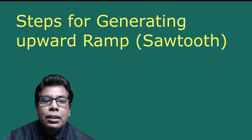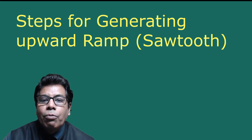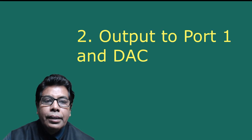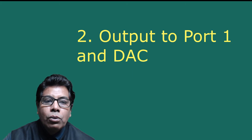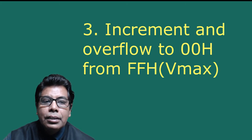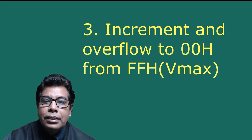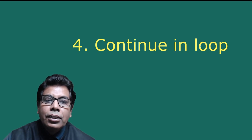The steps for generating an upward ramp are as follows. First step: start with 00H — the digital input should be 00H. Second step: output to port 1 and DAC. Third step: increment and overflow to 00H from FFH (Vmax). Fourth step: continue in loop. These are the four steps.